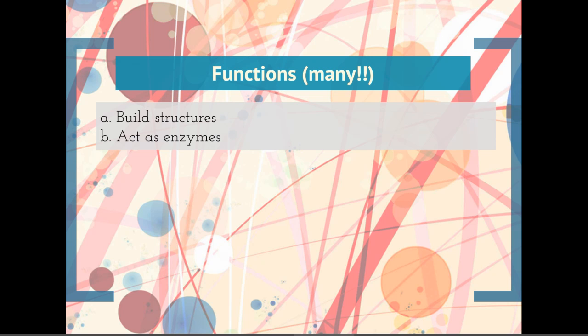The other really important thing they can do is act as enzymes. Enzymes are chemicals that will speed up chemical reactions without being used up in those reactions, so they help control the rate of chemical reactions in our body. We will talk more about enzymes and how they work in a later lecture.